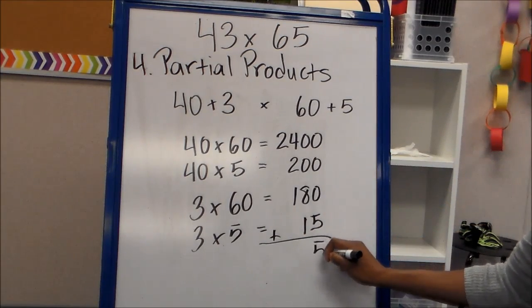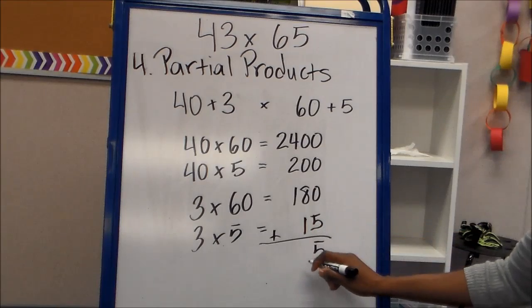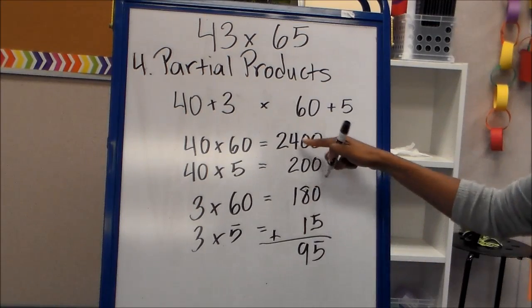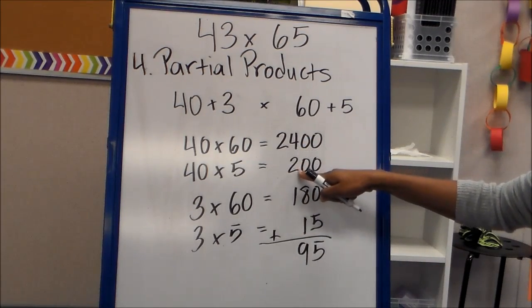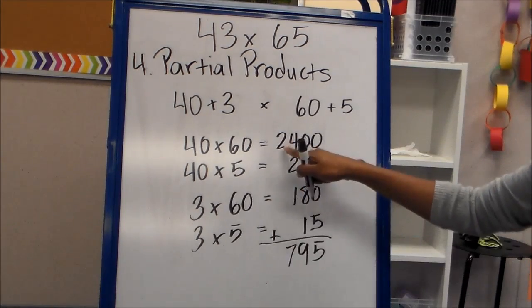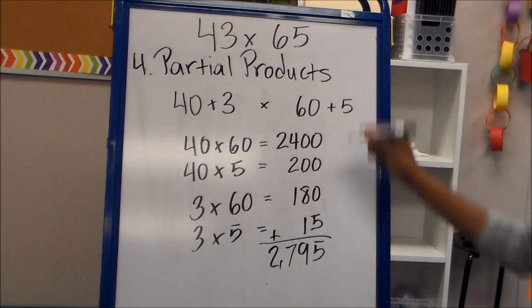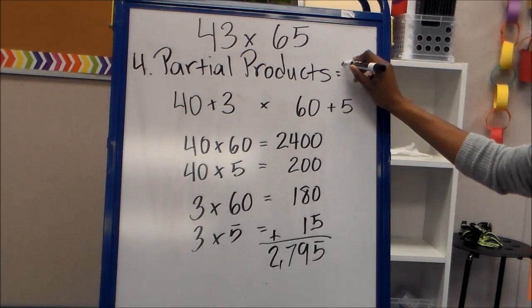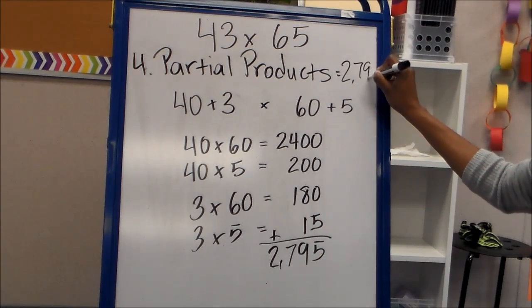The ones place you have a 5. In the tens place you have 8 plus 1, which is 9. Then the hundreds place, 4 plus 2 is 6, plus 1 is 7. And then the thousands place you have a 2. So the answer to that is also 2,795.